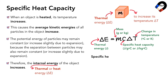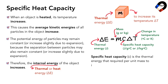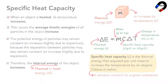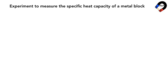Specific heat capacity c is defined as the thermal energy required per unit mass to increase the temperature by one degree Celsius or Kelvin. It remains constant for a given substance.